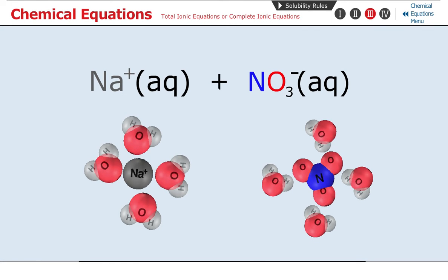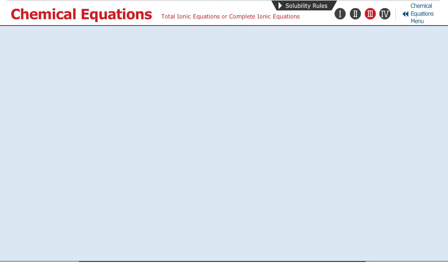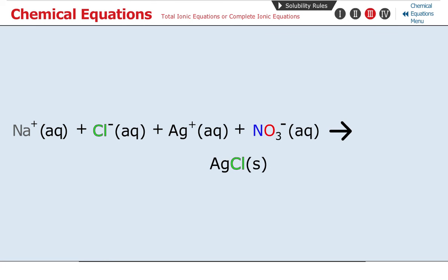The overall equation is, and listen up, Na positive Aq plus Cl negative Aq plus Ag positive Aq plus NO3 negative Aq yields AgClS plus Na positive Aq plus NO3 negative Aq.